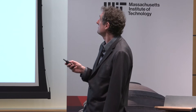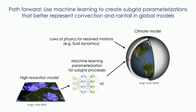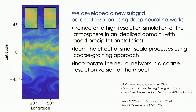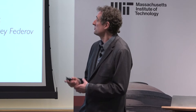This is our current situation. We have our climate model, largely based on the laws of physics for the resolved motions, but we also have these subgrid parameterizations. We put a lot of work into them, but they're not improving much as time goes by. One way we think we can use machine learning is to replace these parameterizations with a machine learning algorithm — a neural net of some sort — trained most commonly on a high resolution model. This high fidelity model can only be run for a short period of time, perhaps 40 days to a year, not the hundreds or thousands of years needed for climate modeling.